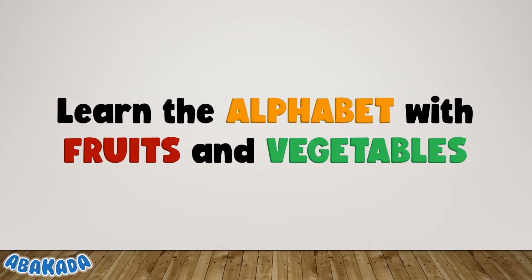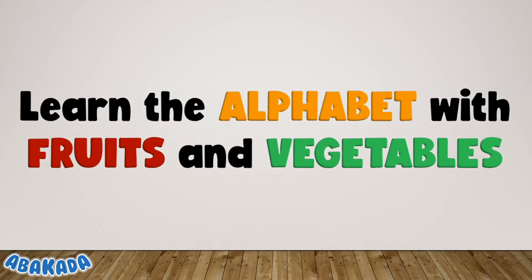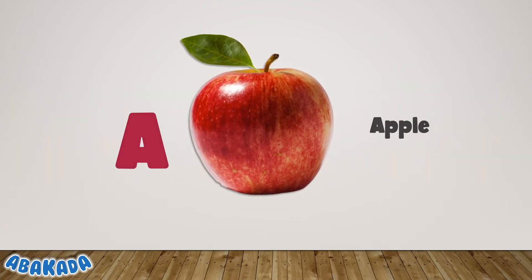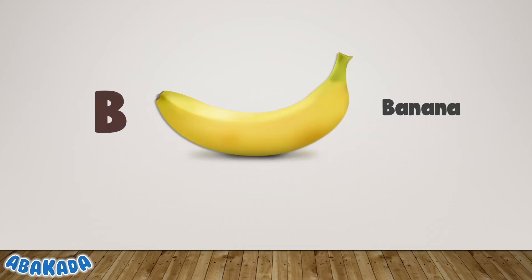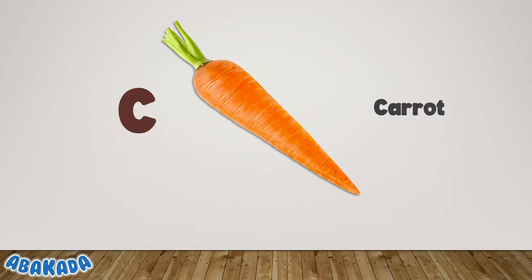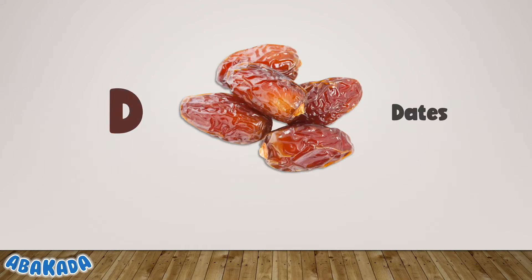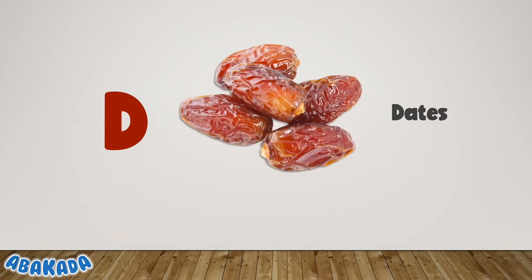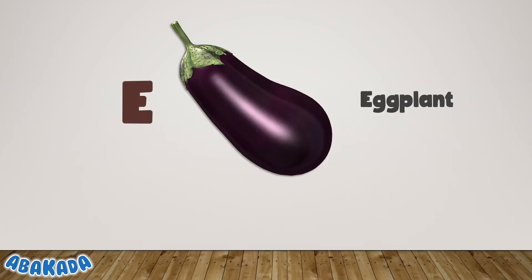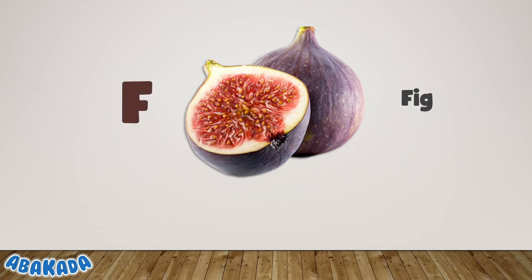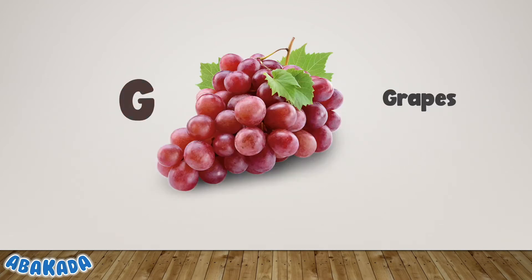Abacada — learn the alphabet with fruits and vegetables. A: Apple. B: Banana. C: Carrot. D: Dates. E: Eggplant. F: Fig.